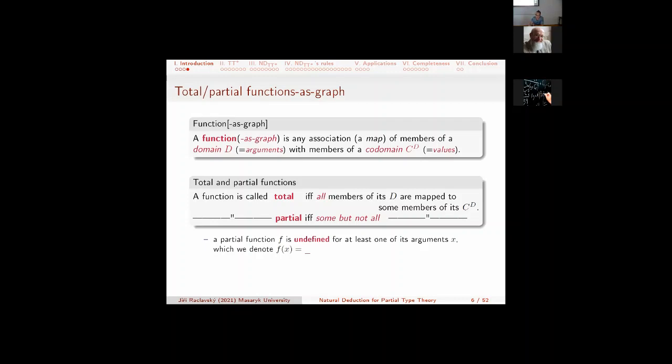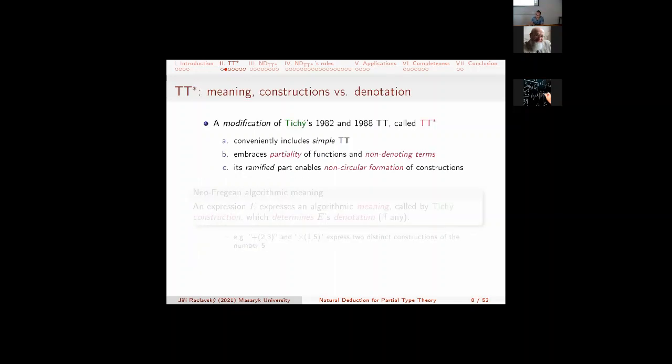Partial functions are undefined for at least some arguments, which I denote by using the underscore character, which is of other use in the notation. But anyway, it's really visible. So, briefly, some sketchy description of the logic TT star.